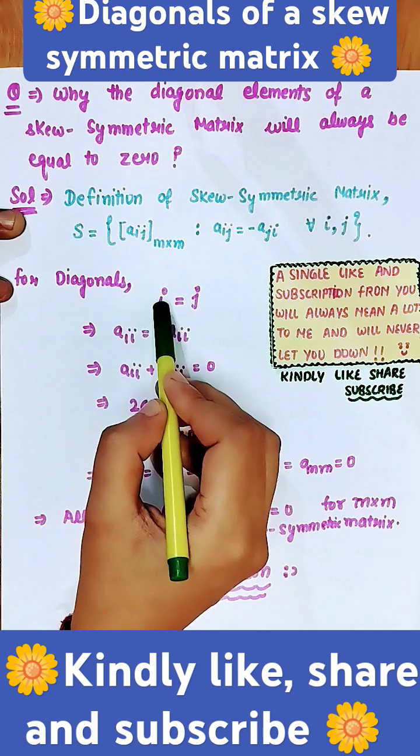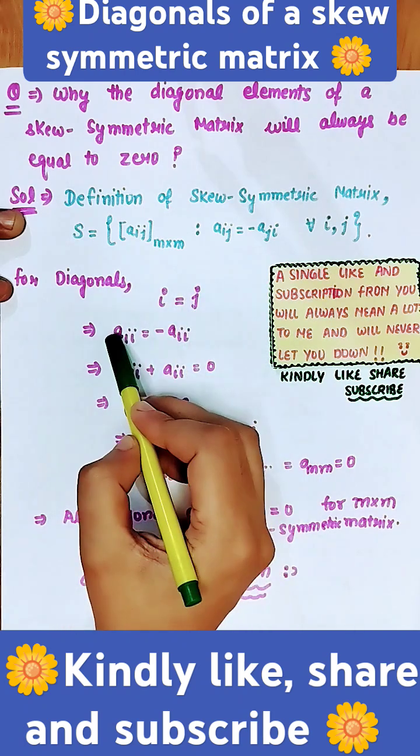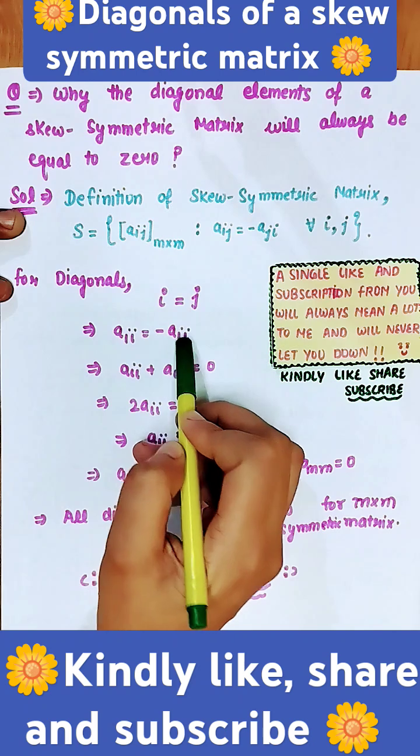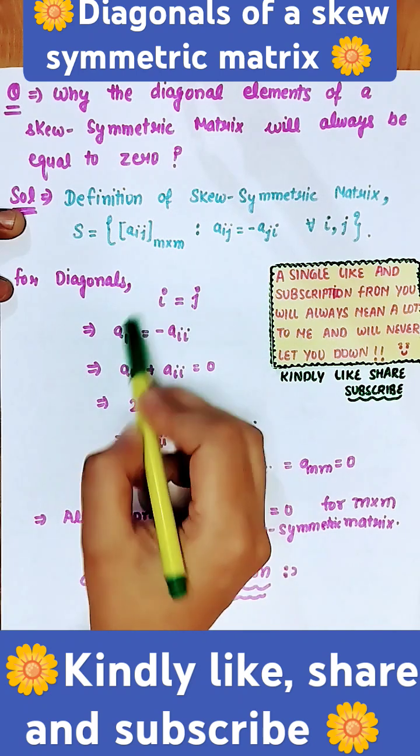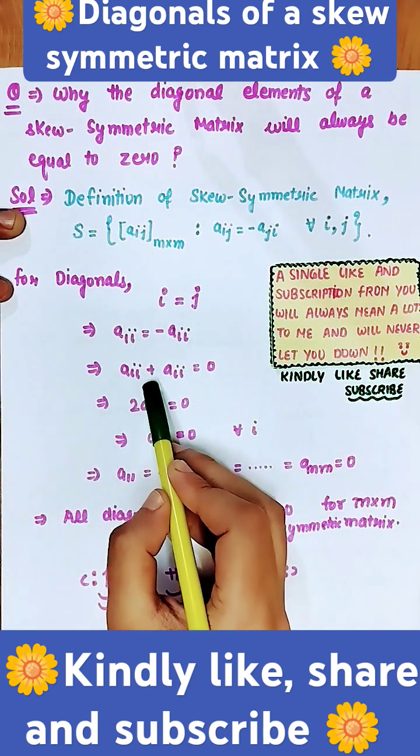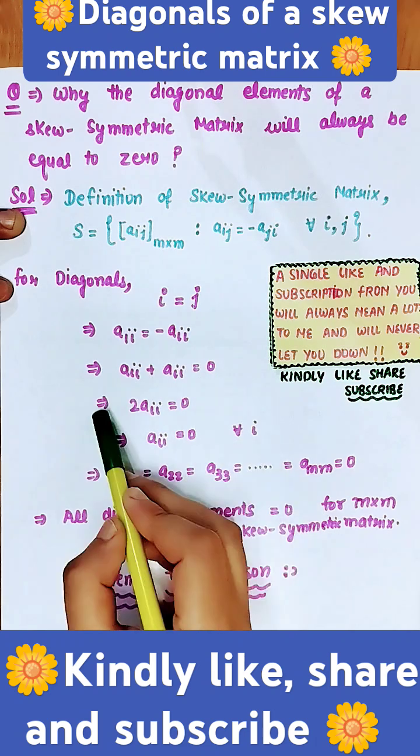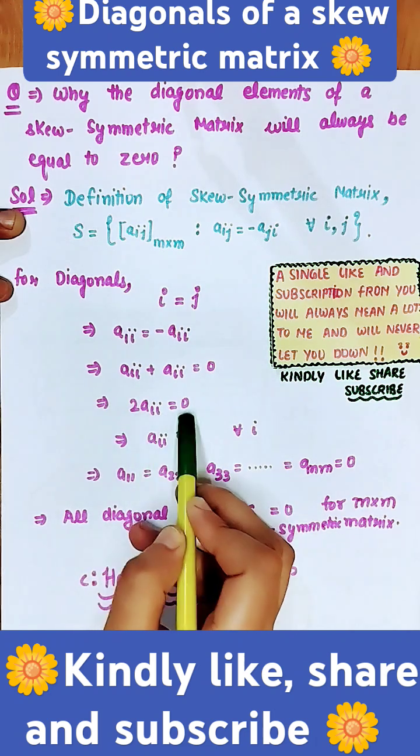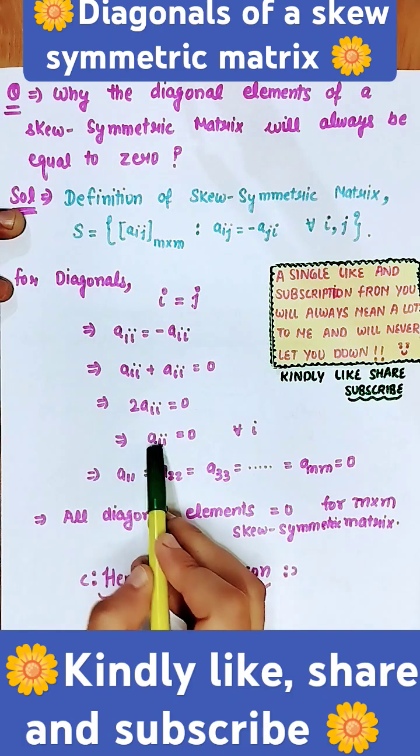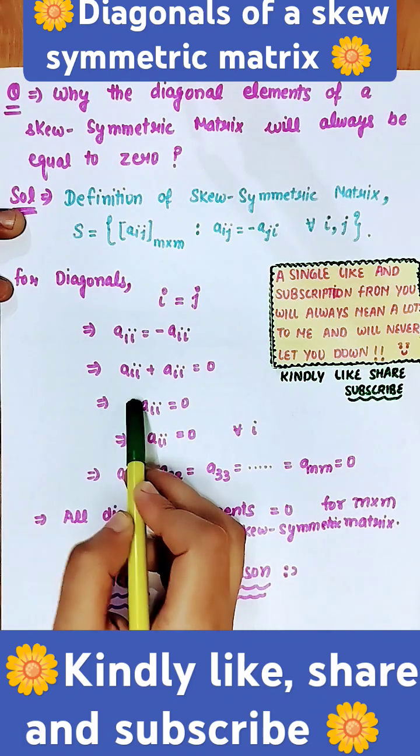For diagonals, we have to take i = j, which implies that Aii = -Aii. Shifting this value to the left-hand side, we get Aii + Aii = 0, which implies that 2Aii = 0, and therefore Aii = 0 because 2 is a constant quantity.